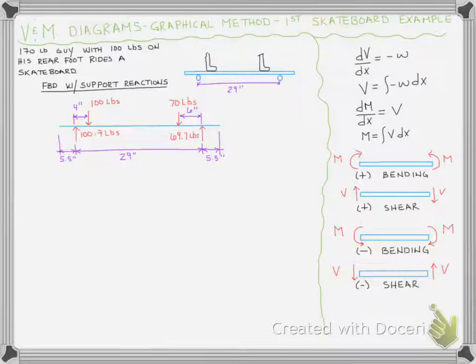We already have the free body diagram with the support reactions calculated so we can jump right into drawing our shear diagram. If we look over to the right on the sheet we can see the relationships that we talked about in lesson 10. We know that the shear diagram is nothing more than the area under the negative of the load diagram. We also established that point loads don't have areas but that just means they're a jump and we jump in the direction of the load when we're drawing the shear diagram.